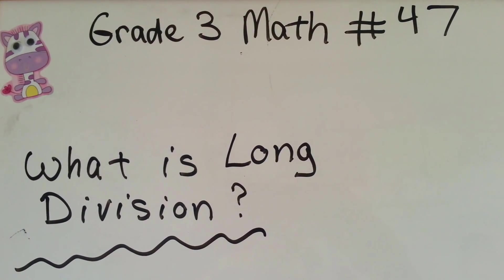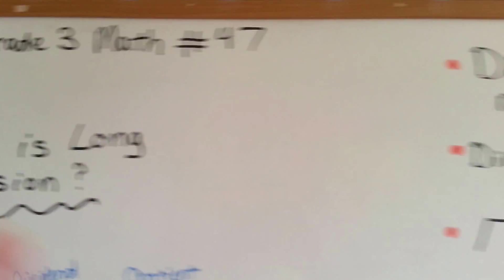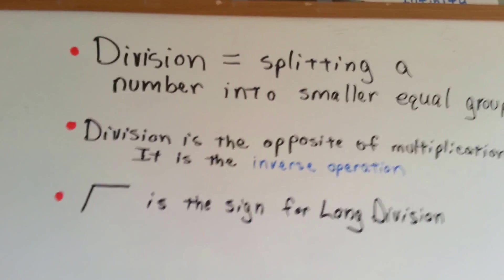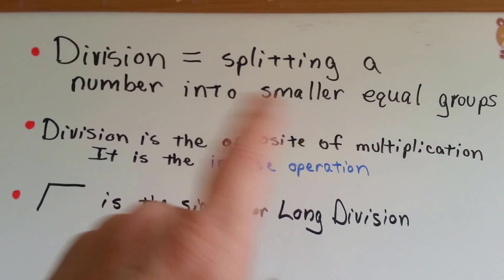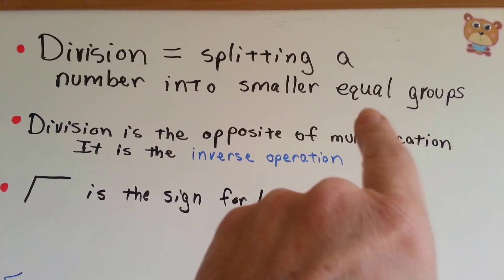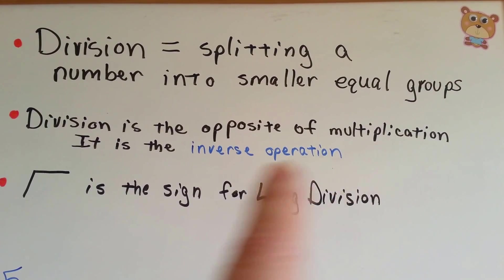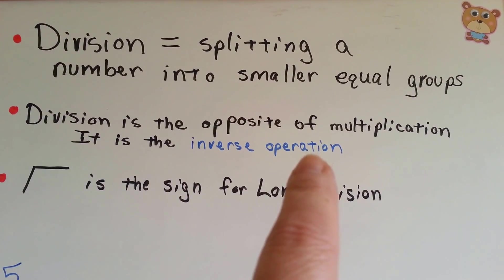Grade 3 math, number 47. What is long division? Well, first of all, what is division? Division is when you're splitting a number into smaller equal groups. It's very important that they're equal groups. It is the opposite of multiplication. It's the inverse operation.